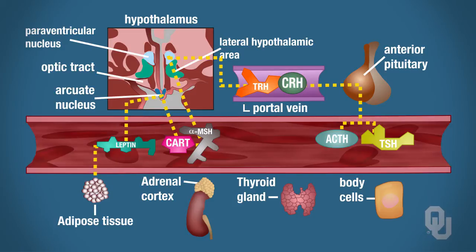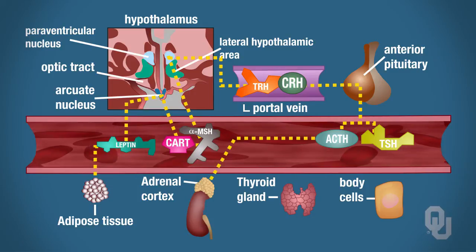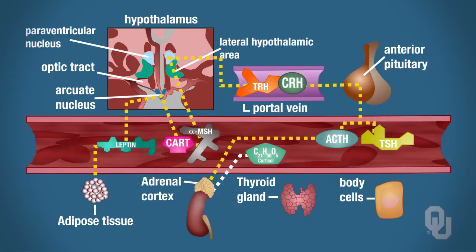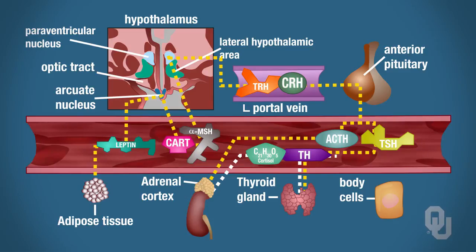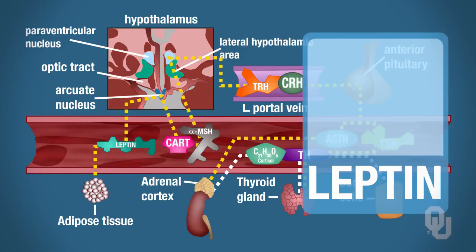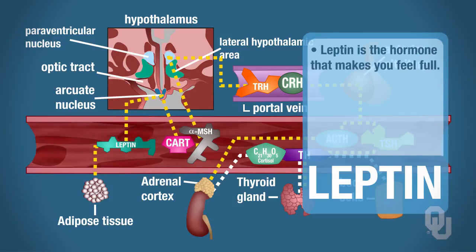ACTH targets the adrenal cortex, causing synthesis and secretion of cortisol. TSH targets the thyroid gland, causing synthesis and secretion of thyroid hormone. With both cortisol and thyroid hormone in the blood, metabolism is increased. All of this happens because of leptin—the hormone that makes you feel full, the long-term satiety factor.